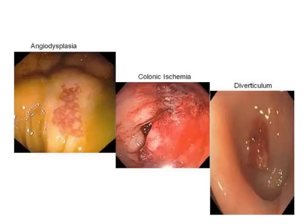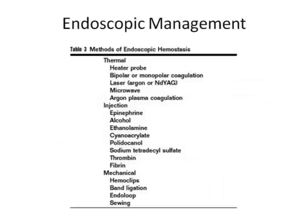These are some examples of lesions found on colonoscopy: angiodysplasia, colonic ischemia with pale mucosa and areas of bleeding, and diverticular bleed. Endoscopic management is very important because a large number of patients need some degree of intervention to control bleeding. There are thermal, injection, and mechanical strategies using colonoscopy. The most common are thermal, but injection of epinephrine, alcohol, and other substances is not uncommon. Skilled GI specialists also use hemoclips, band ligations, and endo-loops.